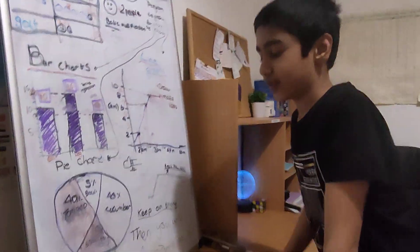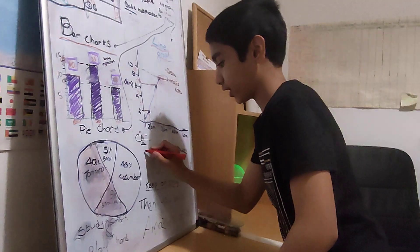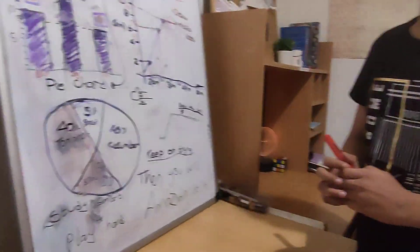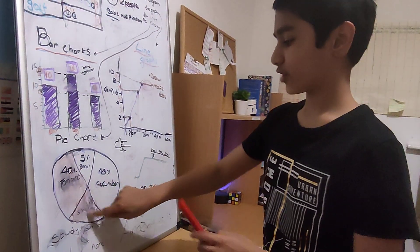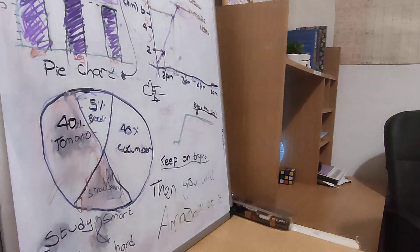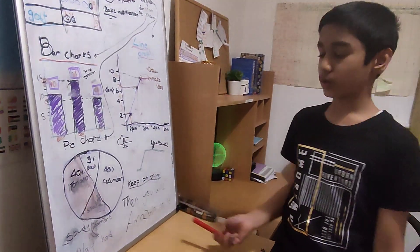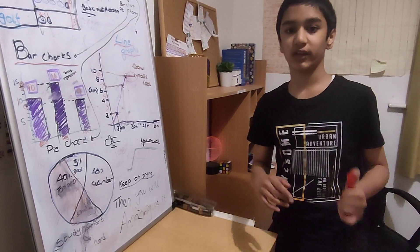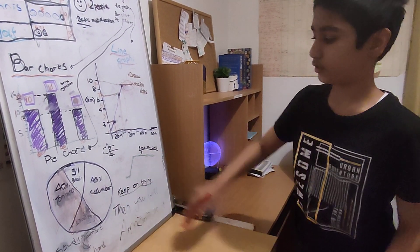Next we go on to pie charts. This is around percentages — they draw a circle divided into sections. Let's say there are 100 people in the survey and 40% like cucumbers. Using your percentage skills, 40% of 100 is 40 people. It's really simple as long as you know your percentages well. That's the key skill needed for pie charts.